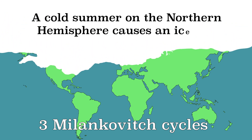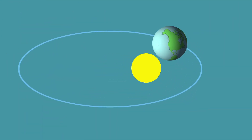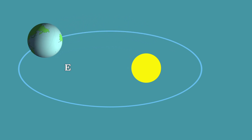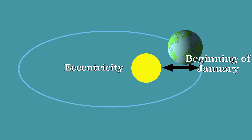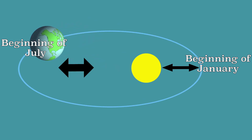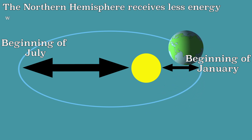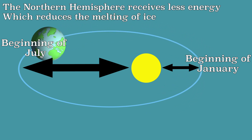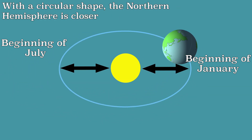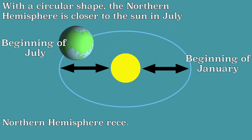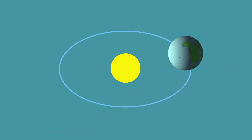First, the Earth does not orbit the sun in a circle, but in an ellipse shape in which the sun is not centered. This is called eccentricity. The point where the Earth is closest to the sun is at the beginning of January, so in July the Earth is farthest from the sun. This is summer in the northern hemisphere, and because of the distance the Earth receives less energy, so the ice melts less quickly — this could be the beginning of an ice age. If the orbit has a circular shape, the Earth is closer to the sun in early July, giving the northern hemisphere more energy and the ice melts, preventing an ice age. The eccentricity changes approximately every 100,000 years.